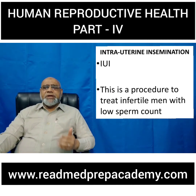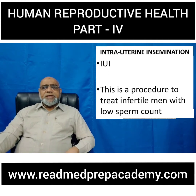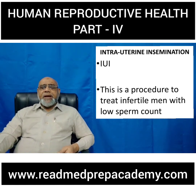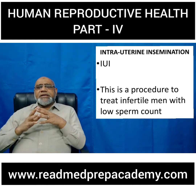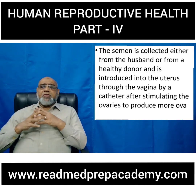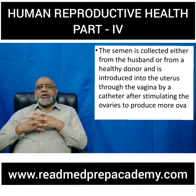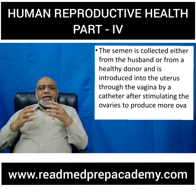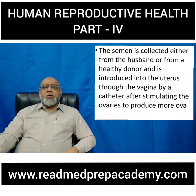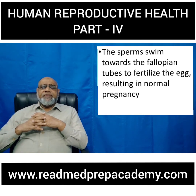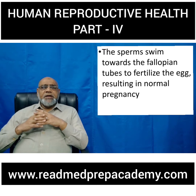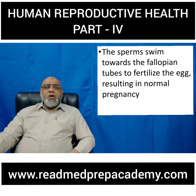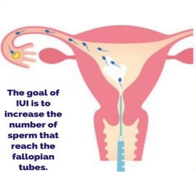What is intrauterine insemination, otherwise called IUI? This is a procedure used to treat infertile men with low sperm count, otherwise called oligozoospermia. The semen is collected from the husband — if the quality and quantity is sufficient — or from a donor, and is introduced into the uterus through the vagina by a catheter, after stimulating the ovaries to produce more ova. The sperms swim towards the fallopian tubes and fertilize the egg, resulting in normal pregnancy. The goal of IUI is to increase the number of sperm that reach the ovum.